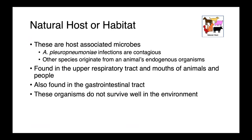All of these organisms are host-associated. Actinobacillus pleuropneumoniae is a contagious infection, readily transmitted from animal to animal, while infections with other species are thought to originate from an animal's endogenous microbiota — they get infected when there is some breach of their normal defenses and organisms already present in the body make their way in. Actinobacillus species are found in the upper respiratory tract and mouths of both animals and people, and also in the GI tract. Importantly, these organisms do not survive well in the environment, so they need their host to live.